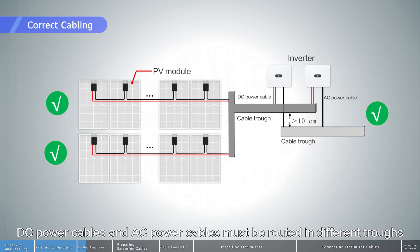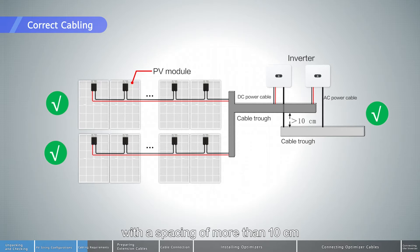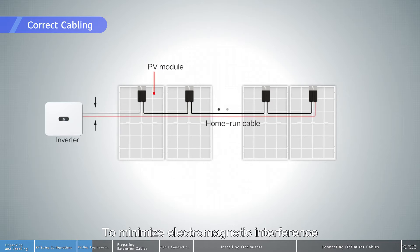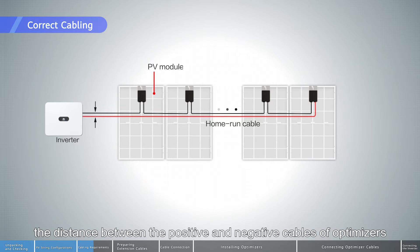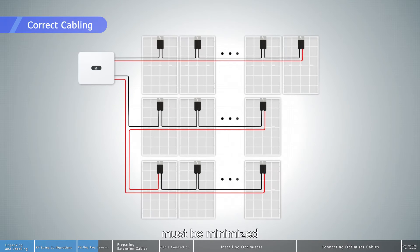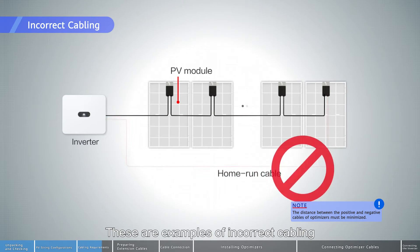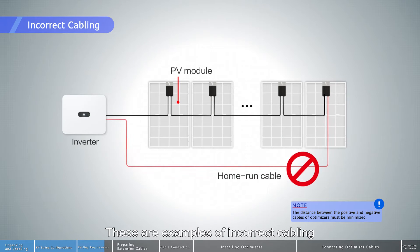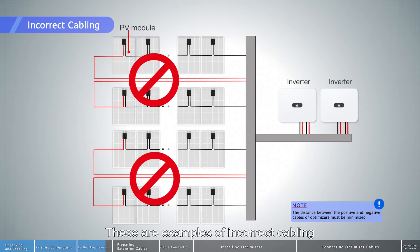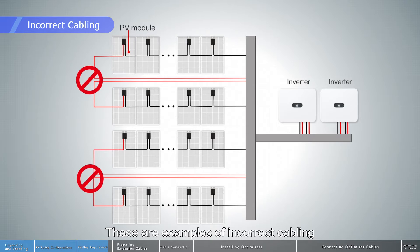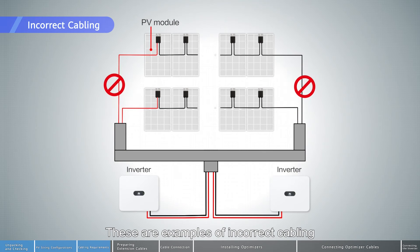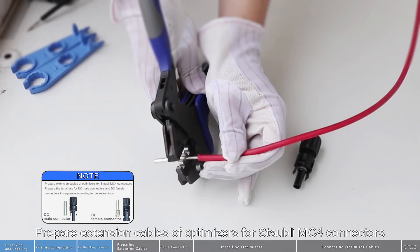DC power cables and AC power cables must be routed in different troughs with a spacing of more than 10 centimeters to minimize electromagnetic interference. The distance between the positive and negative cables of optimizers must be minimized. These are examples of incorrect cabling.